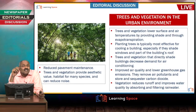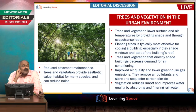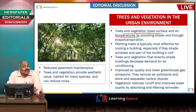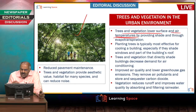Trees and vegetation in the urban environment — what are the advantages? There are around 7 to 8 advantages. First and foremost, trees and vegetation lower the surface and air temperatures. Because of green cover and these trees, the surface temperature will be reduced and air temperature will be reduced.